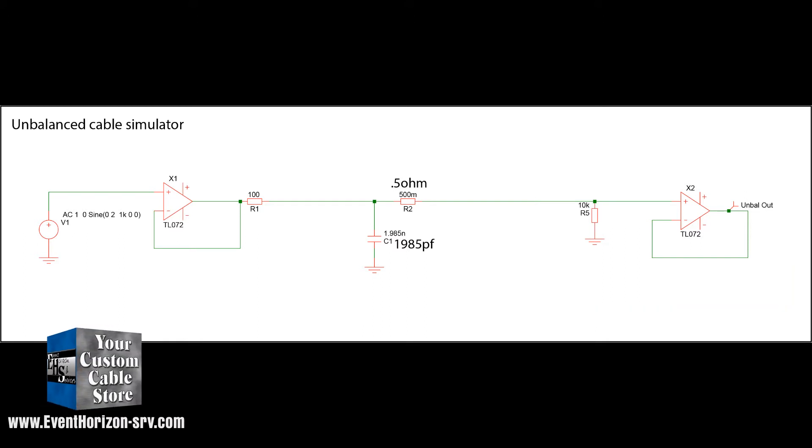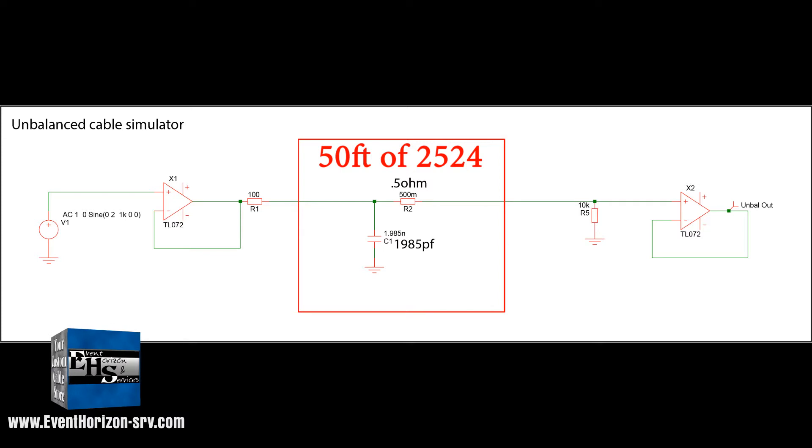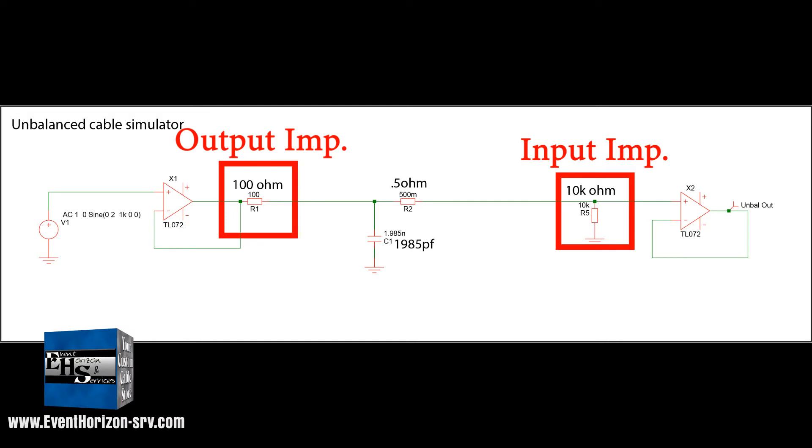When I do tests, I like to push things to the limit so that all the effects are exaggerated. So I have first entered the numbers for 50 feet of Megami 2524, our high end instrument cable. We sell a lot of this guitar cable. At 50 feet, it has a resistance on the center conductor of 0.5 ohms and a capacitance of 1,985 picofarad. For a baseline, I'm going to do a 100 ohm output impedance and 10k ohm input impedance. This is a typical low Z circuit.